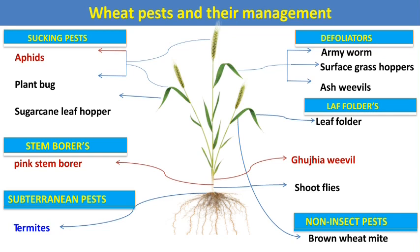Next are subterranean pests, including termites, which attack from the soil on the roots and rootlets of the wheat crop. In the case of defoliators, armyworm and grasshoppers are two major pests that directly attack leaves, causing the plant to become skeletonized. Leaffolders fold the leaves and feed in a concealed condition. Then there is the Gujiya weevil, whose life cycle occurs in the soil and only the adult attacks the wheat crop.